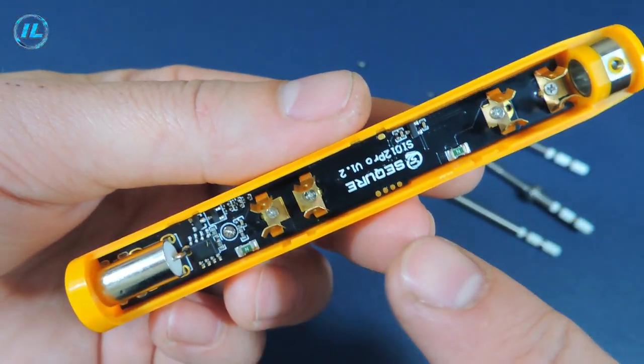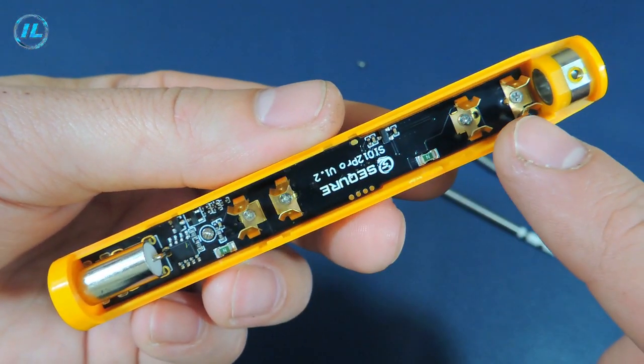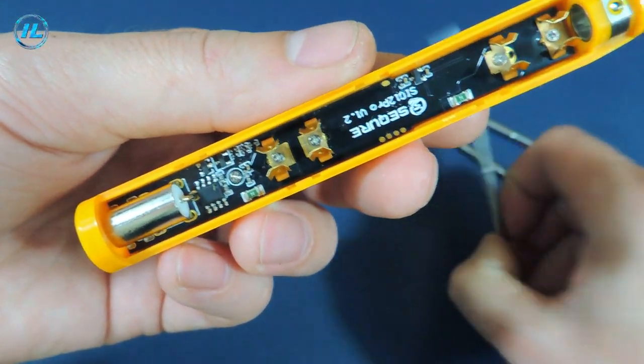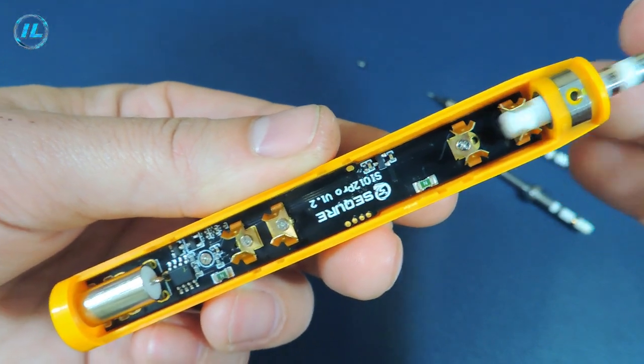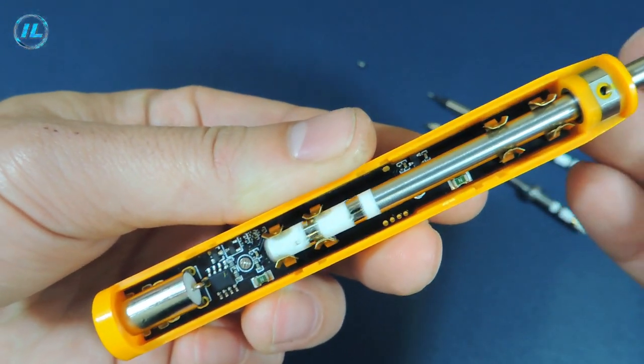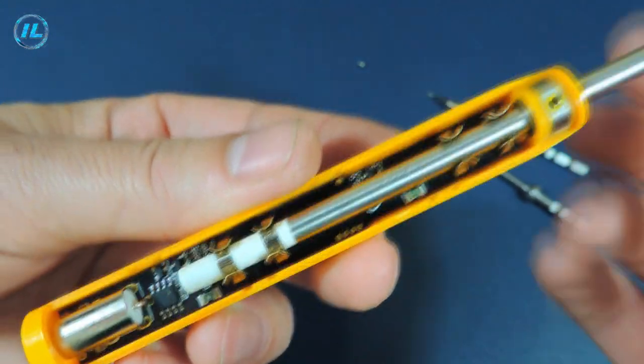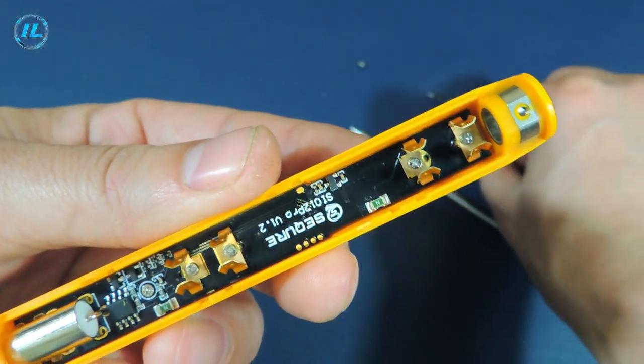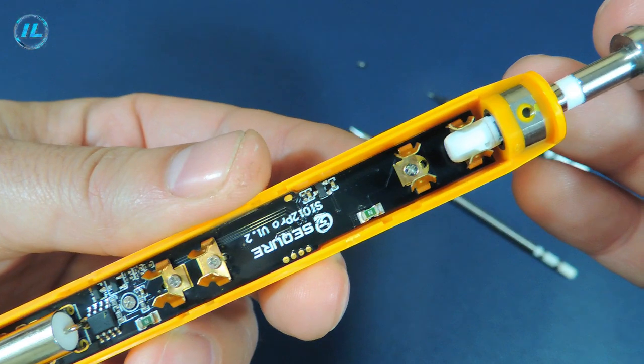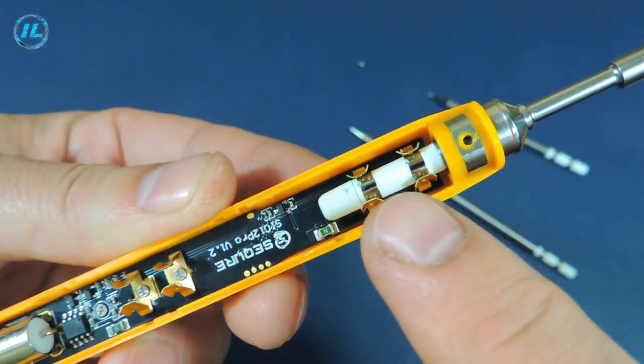Here we see two pairs of contacts. When using T12 type tips, the first pair of contacts is activated. And when using the tip of the TS type, a second pair of contacts is activated.